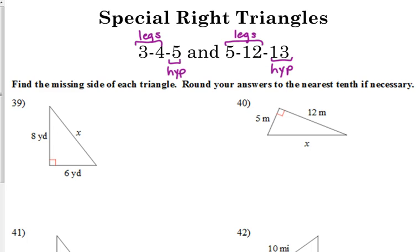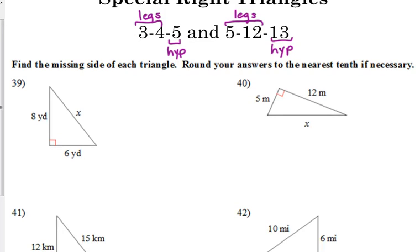More likely, what you're going to see is multiples of 3, 4, 5 and multiples of 5, 12, 13. For example, problem 39 has one leg of 6 yards and one leg of 8 yards. Well, 6 is 3 times 2 and 8 is 4 times 2, so we've got 3, 4. Therefore, the hypotenuse is 5 times 2 — the hypotenuse is 10 yards. So 6, 8, 10 is a multiple of the 3, 4, 5.